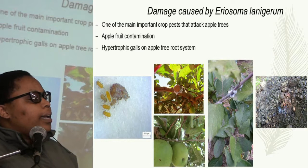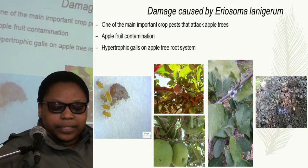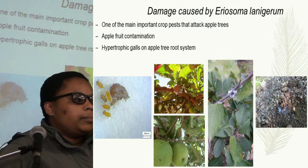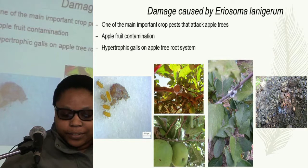The other main issue with the woolly apple aphid is that it attacks the root system of the apple trees. Its presence on the root system results in the formation of hypertrophic galls through its feeding, and the presence of these hypertrophic galls impedes the flow of nutrients and water from the root system of the apple trees to the aerial parts of the plant.